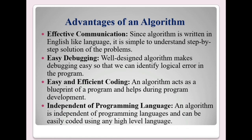The next advantage is easy debugging. Debugging means identifying and correcting errors or mistakes — a 'bug' is a mistake or error. A well-defined algorithm makes debugging easy, so we can identify mistakes very easily in the program. Next is easy and efficient coding: an algorithm acts as a blueprint — that is, a design — of the program and helps during program development. By seeing the algorithm, we can easily develop programs.